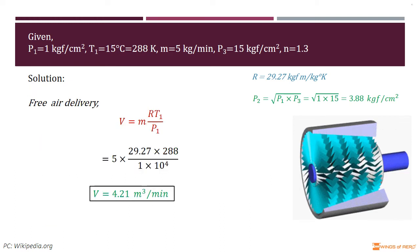Next, find out the free air delivery. Free air delivery is a common measure of the capacity of an air compressor. It is the actual quantity of compressed air converted back to the inlet conditions of the compressor. Then write V = (ṁRT₁)/P₁, where ṁ is mass rate, R is the gas constant of air, T₁ is the inlet temperature, and P₁ is the inlet pressure. Now, solving this equation with those values, we get the required free air delivery: 4.21 m³/min.